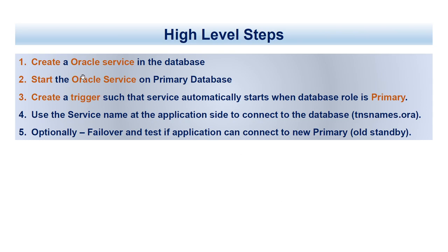Here are the high-level steps: you will create an Oracle service in the database; you will start the Oracle service on the primary database; you will create a trigger such that the service automatically starts when the database role is primary; you will use that service name at the application side to connect to the database via tnsnames.ora; and optionally we will perform a failover and test that the application connects to the new primary.